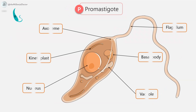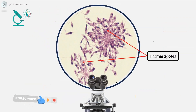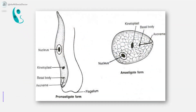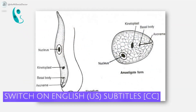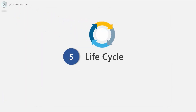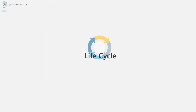The promastigote structure includes: the flagellum, basal body, vacuole, nucleus, kinetoplast, and axoneme. These are the promastigotes as seen under a microscope. A comparison between the amastigote form and the promastigote form shows the similarities in the structures of both forms.